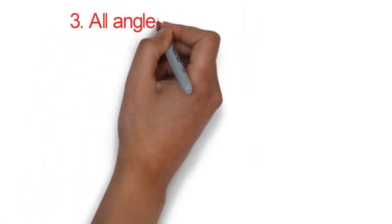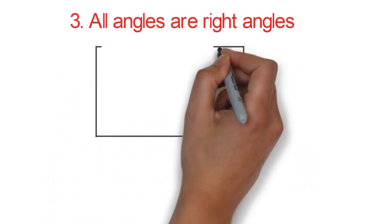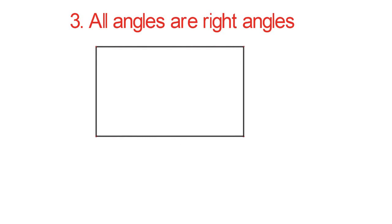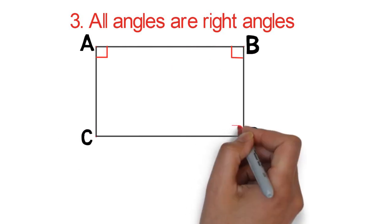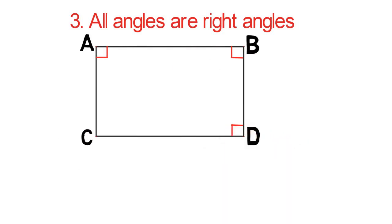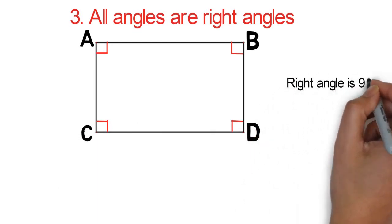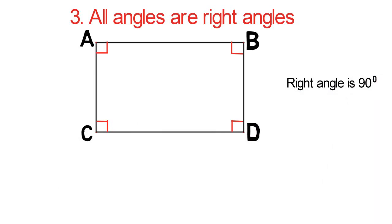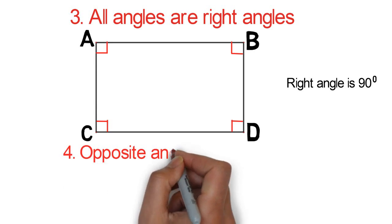Three: all angles are right angles. Can you see the right angles? Angles A, B, C, and D are all 90 degrees. A right angle is 90 degrees.